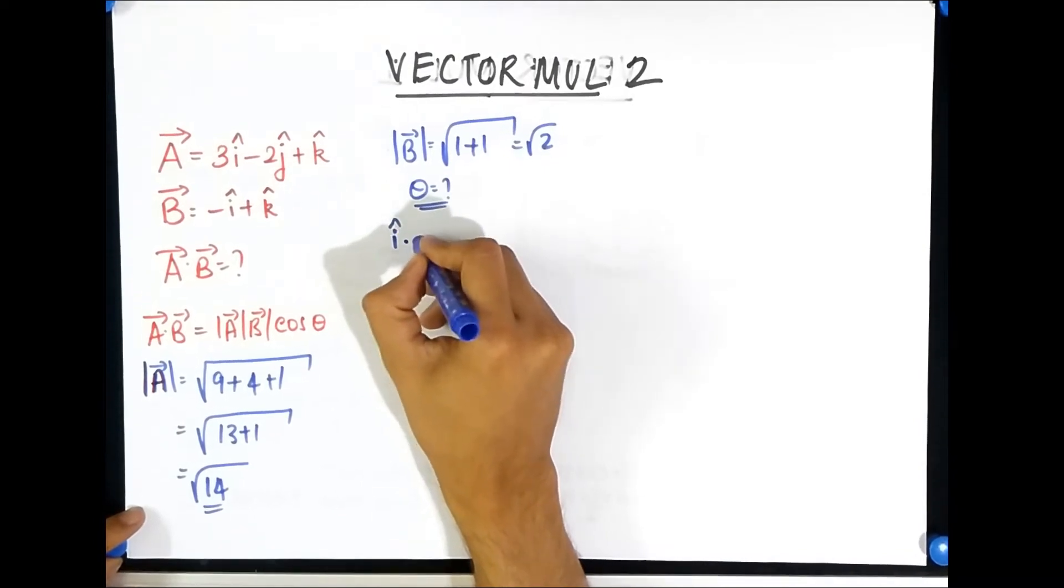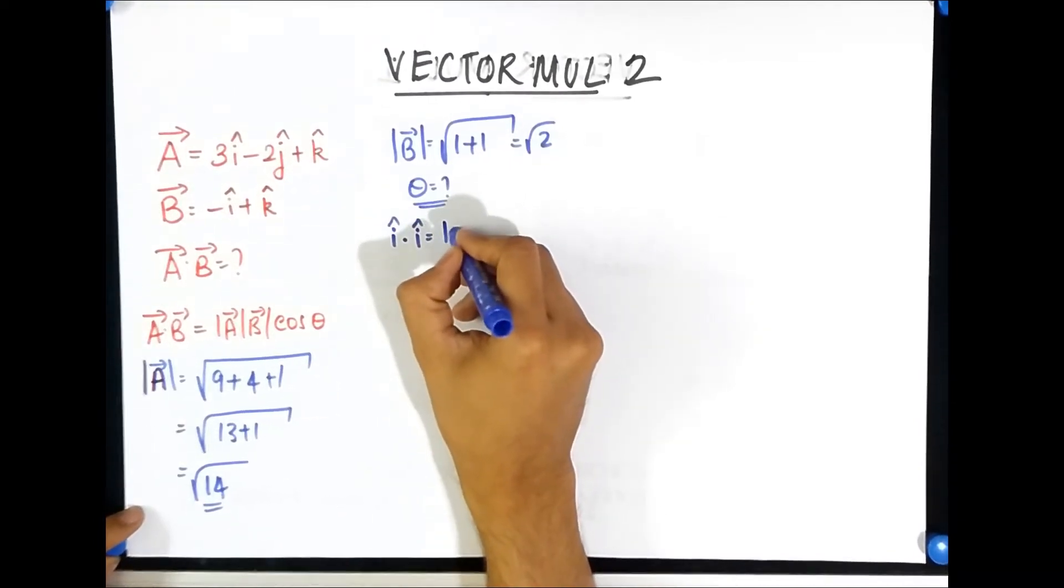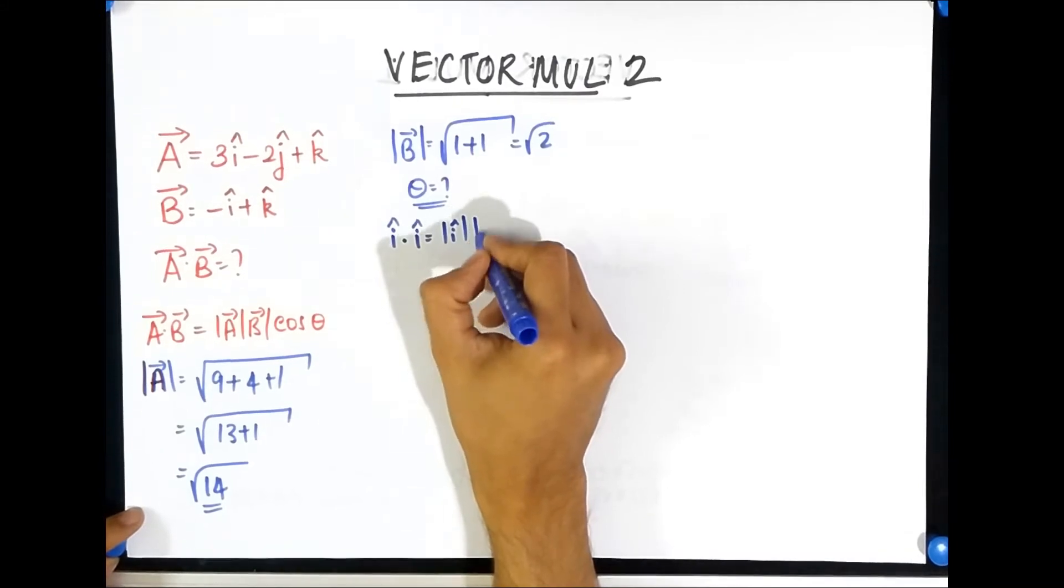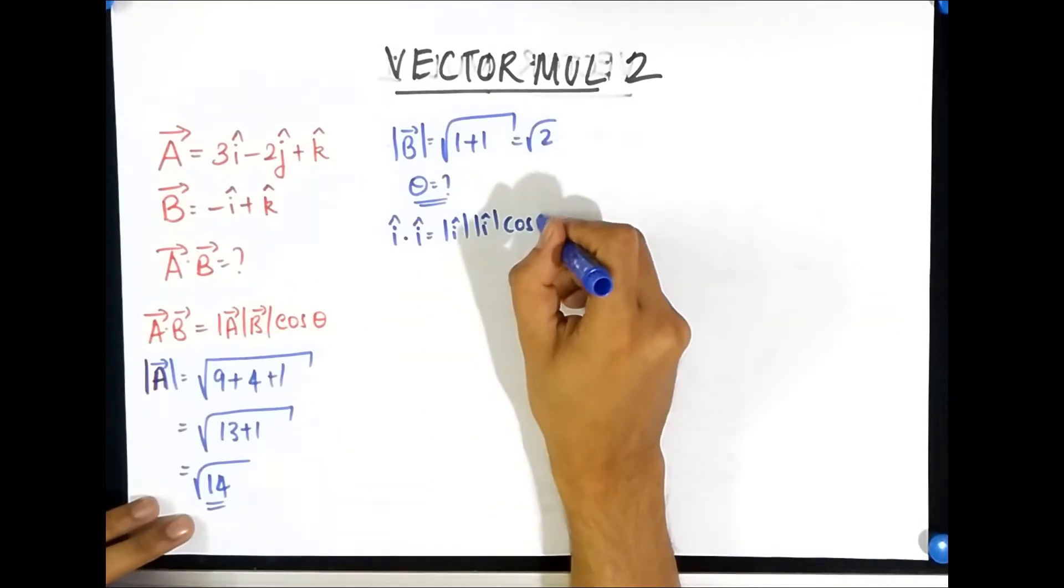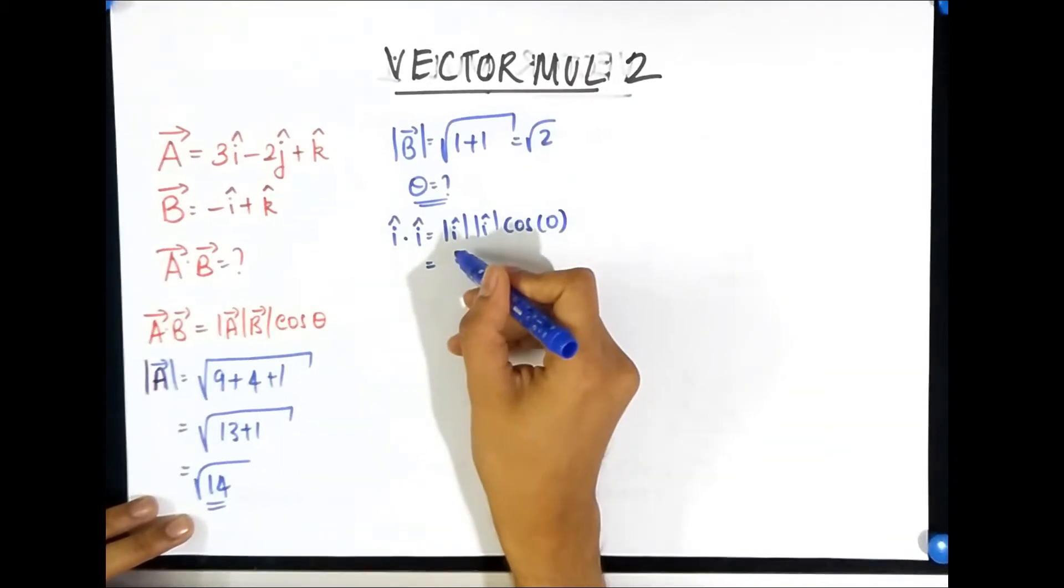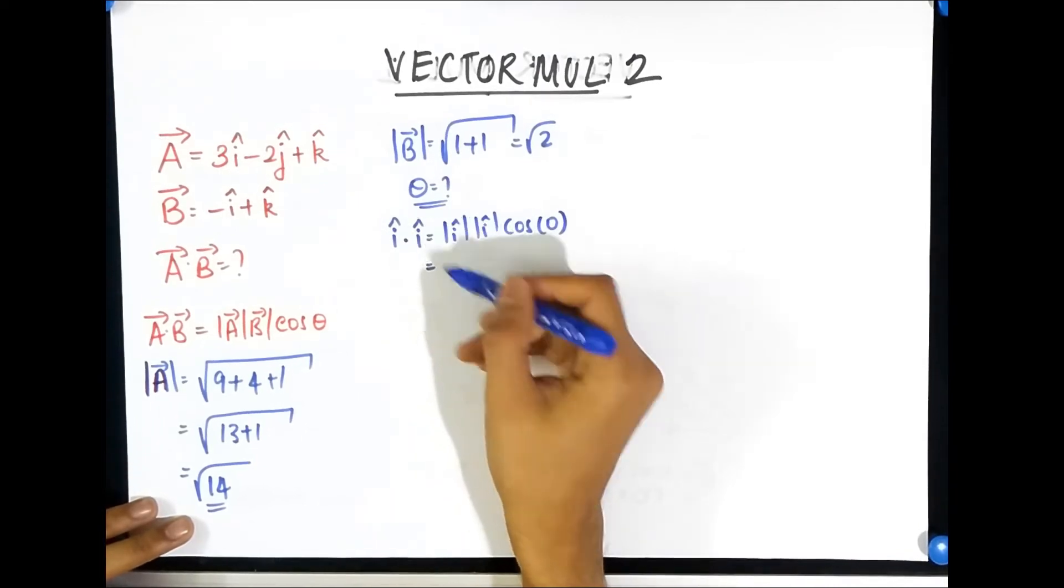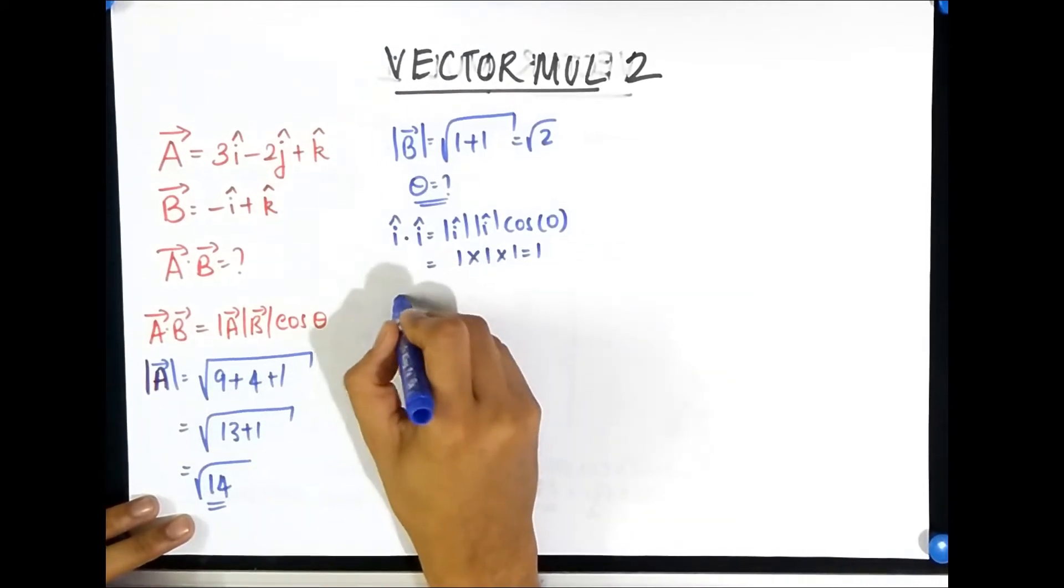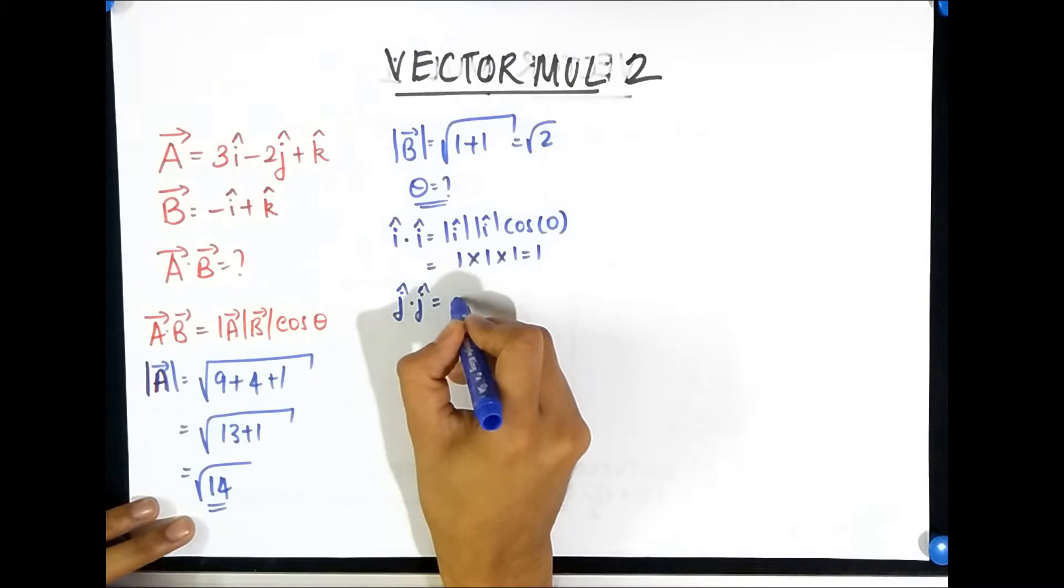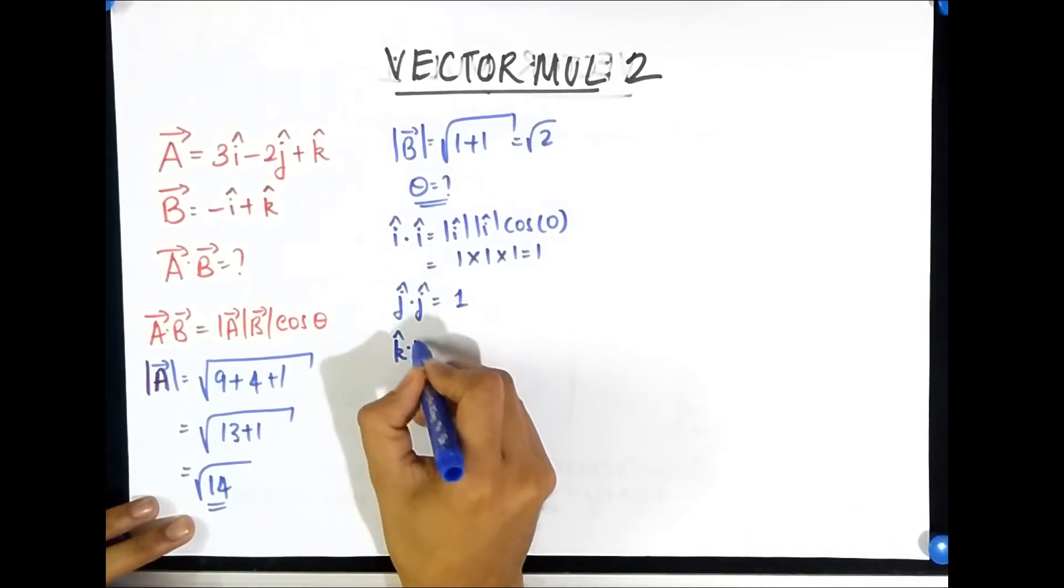Let's see, if you take i cap and you dot it with i cap, what do you think we will get? Well it's going to be the magnitude of i cap into the magnitude of i cap into cos of the angle between i cap and i cap. What is the angle between i cap and i cap? Well i cap is along the x, another i cap is also along the x, zero. And what is the magnitude of i cap? It's a cap which tells you it's a unit vector so it's one times one times one which is just one. Similarly j cap dot j cap is also one and k cap dot k cap is also one.